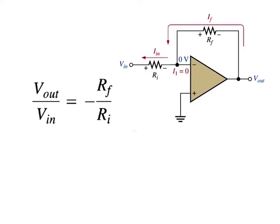Vout over Vin is the overall gain of the inverting amplifier. The closed loop voltage gain of the inverting amplifier is given by ACL(I) equals minus RF over RI. This equation shows that the closed loop voltage gain is the ratio of the feedback resistance to the input resistance, and is independent of the op-amp's internal open loop gain. Thus, negative feedback stabilizes the voltage gain. The negative sign indicates inversion.